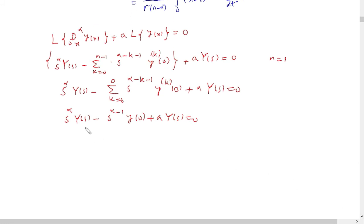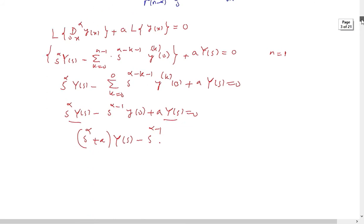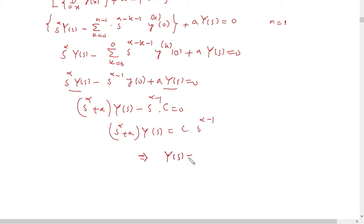Taking Y(s) as common from the first and last terms gives (s^α + A)·Y(s) minus s^(α−1)·y(0) equals 0. From the initial condition, y(0) equals the constant C. Plugging in this value and moving the term to the right side, we get (s^α + A)·Y(s) = C·s^(α−1), which gives Y(s) = C·s^(α−1) / (s^α + A).